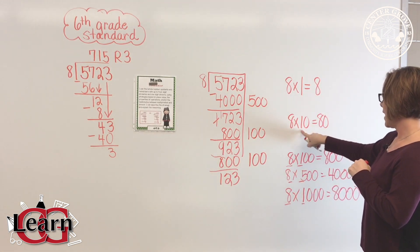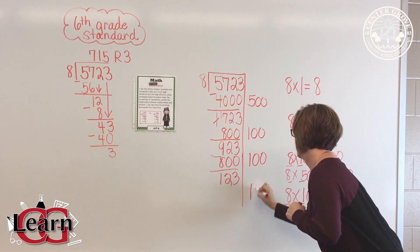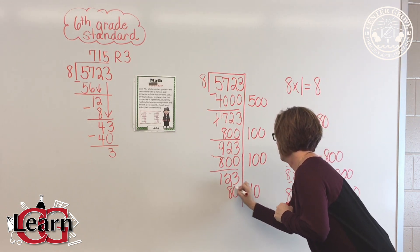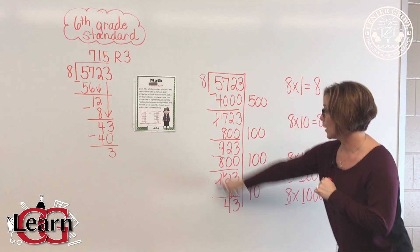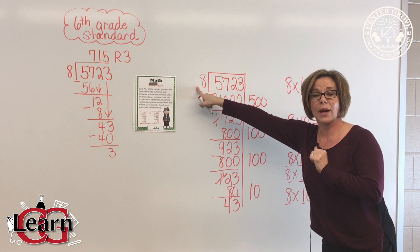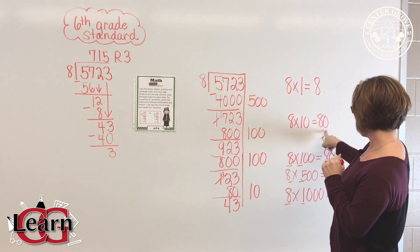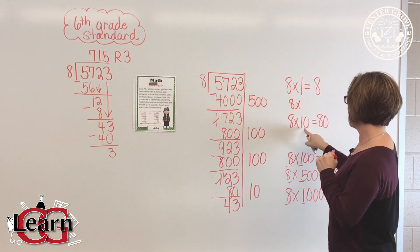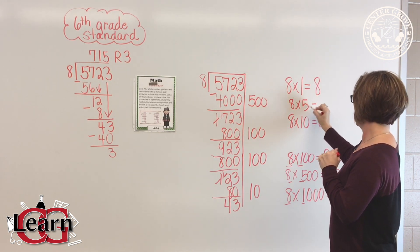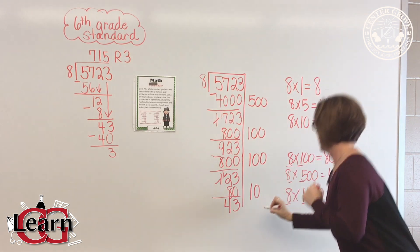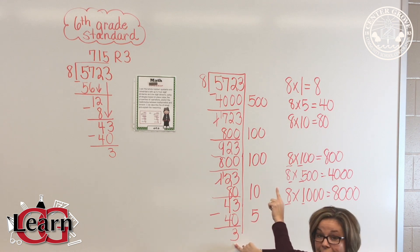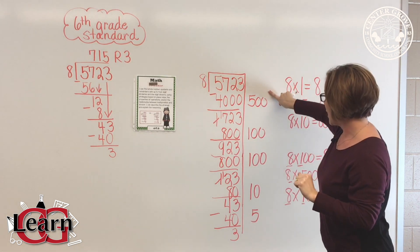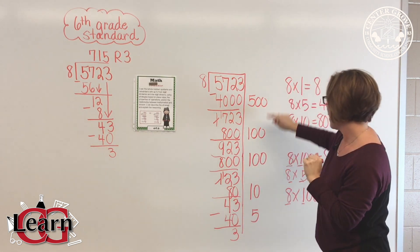I look over here — I have 8 times 10, which is 80. I have to keep going. Half of 10 is 5, so 8 times 5 is 40. The difference is 3, which is less than 8, so that becomes my remainder. I have to add up all my partial quotients.